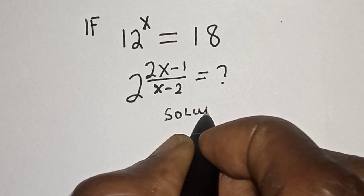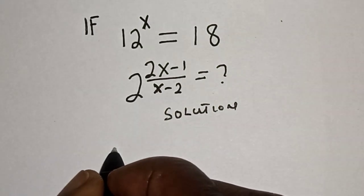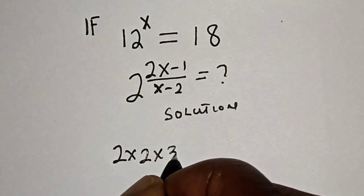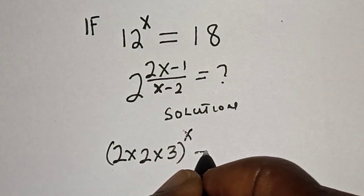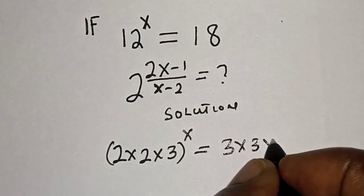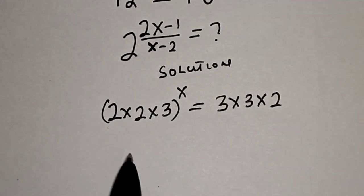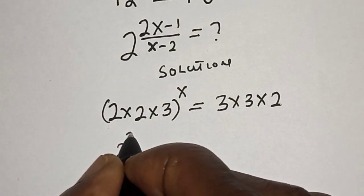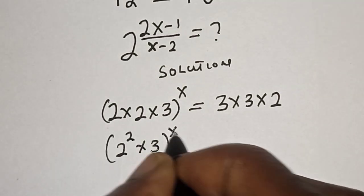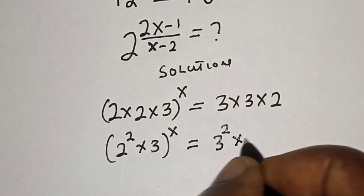Solution. 12 to the power of x can be written as 2 multiplied by 2 multiplied by 3, to the power of x, is equal to 18, which can be written as 3 multiplied by 3 multiplied by 2. So 2 times 2 can be written as 2 squared, multiplied by 3, all raised to the power of x, is equal to 3 times 3, which is 3 squared multiplied by 2.